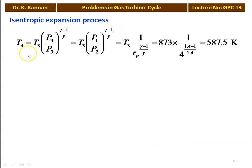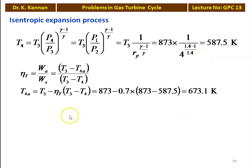For the isentropic expansion process, we calculate the temperature after isentropic expansion: T4 equal to T3 into (P4/P3) to the power (gamma minus 1)/gamma. We know P4/P3 equal to P1/P2, which is 1/Rp. So T4 equal to T3 into (1/Rp) to the power (gamma minus 1)/gamma. Substituting numerical values: 873 into (1/4) to the power (1.4 minus 1)/1.4 equal to 587.5 Kelvin. Then we define the turbine efficiency: actual work output divided by isentropic work output, in terms of temperature (T3 minus T4a) divided by (T3 minus T4). We calculate T4a: T3 minus eta_T into (T3 minus T4), which is 873 minus 0.7 into (873 minus 587.5) equal to 673.1 Kelvin.